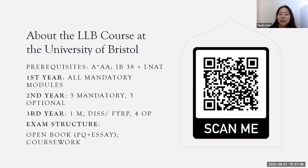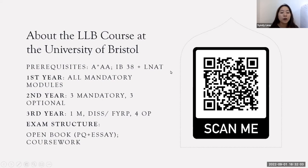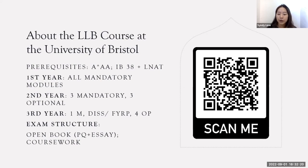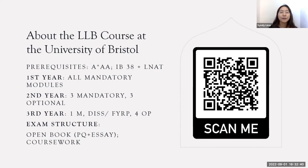Now I'll quickly share with you what the law course is like at the University of Bristol. For prerequisites, you can scan the QR code on screen to go to the Bristol law course page. If you are taking A-levels, the standard offer is A* AA. If you are taking IB, it's 38 points. You will also have to take the LNAT, and Bristol's benchmark varies every year — typically between 18 to 20-something out of 42.